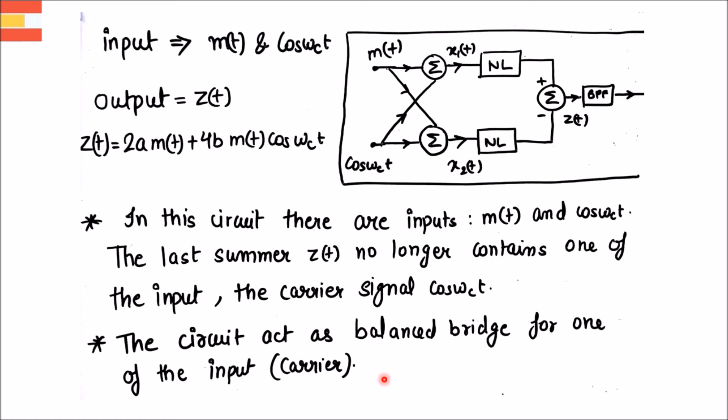The circuit acts as balanced bridge for one of the input, that is carrier. So we can say the system is acting as a balanced bridge for the carrier. That's why it is called a balanced modulator because it's balanced with respect to carrier.